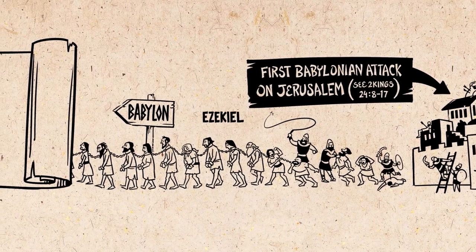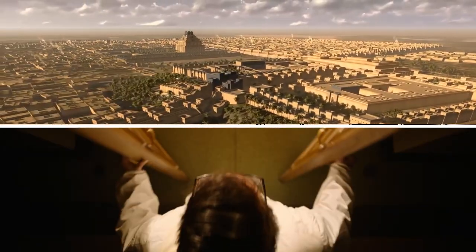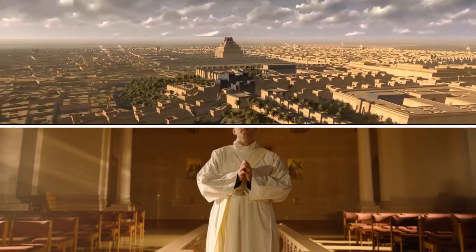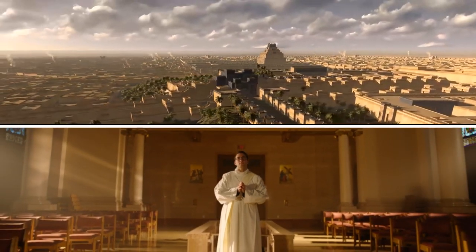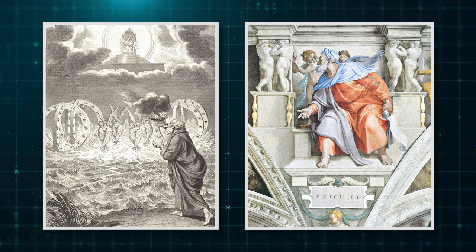The Book of Ezekiel claims to be the words of Ezekiel Ben-Buzi, a priest living in exile in Babylon between 593 and 571 BC. Ezekiel, a prophet, describes a flying chariot in his book.